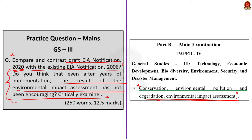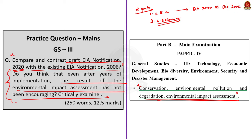Now, how to approach this question? There are two key directives: 'compare and contrast' and 'critically examine.' For the first part, we will compare the EIA notification 2006 with the draft EIA notification 2020, charting out the major differences and similarities between the two. For the second part, since the keyword is 'critically examine,' we have to mention the successes and limitations of EIA in India. This is how we are planning to approach this question.